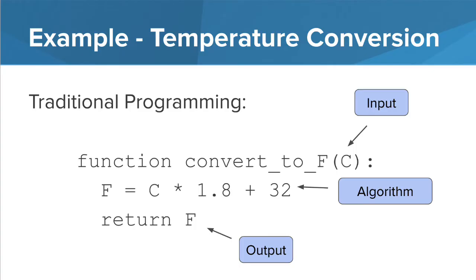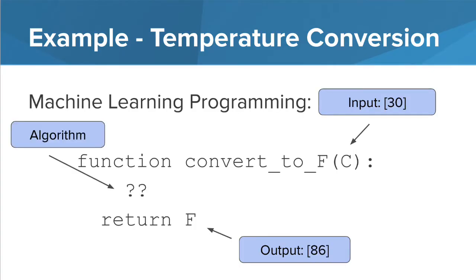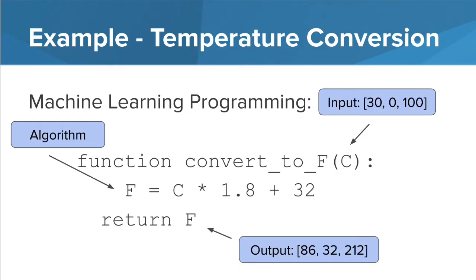In a machine learning environment, this problem looks different. The input and outputs are known, but the algorithm is unknown. Given just one input and one output, the computer might incorrectly calculate the algorithm to be Celsius plus 36. As you add more inputs and outputs, the model can get refined. The computer essentially is learning to make an optimized algorithm to predict Fahrenheit temperatures given a Celsius temperature.